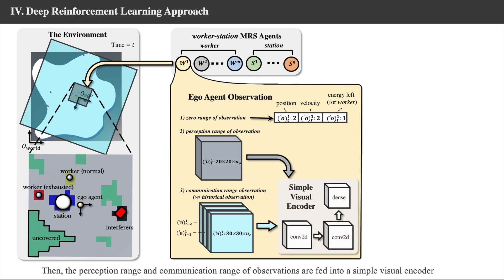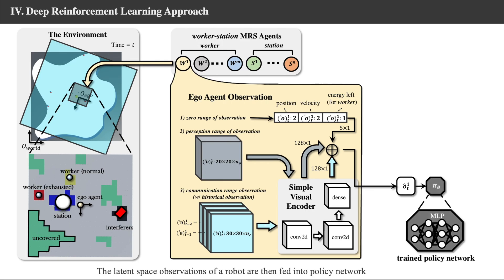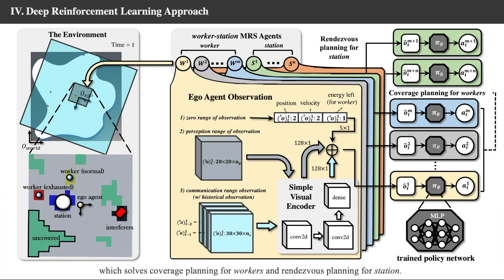Then the perception and communication observation vector are encoded into two feature vectors with a CNN. The final latent space observation vector is a concatenation of the two feature vectors and the zero-range observation vector. The latent space observations of a robot are then fed into policy network and generate the corresponding action vector for the ego-agent during planning, which solves coverage planning for workers and rendezvous planning for station.